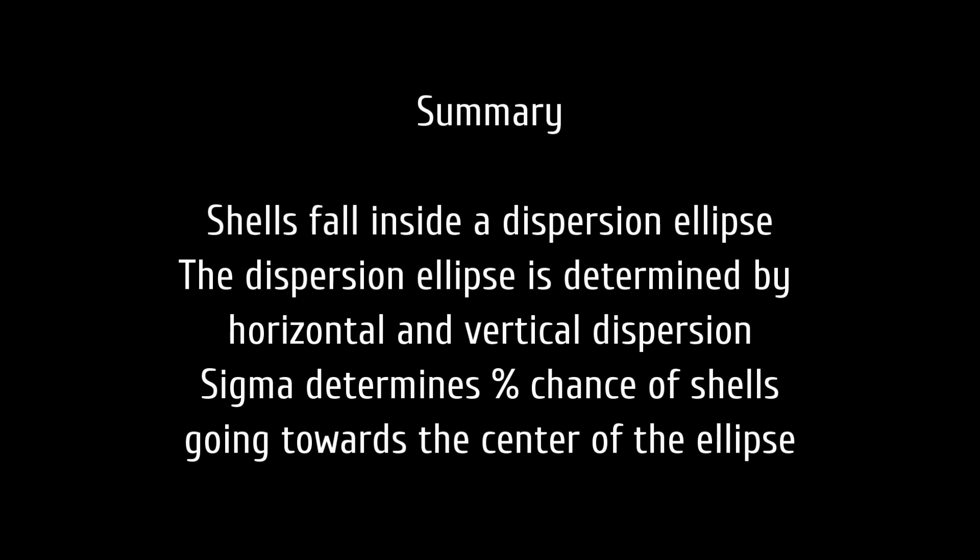To sum up everything: when you fire, your shells fall inside a dispersion ellipse. That dispersion ellipse is determined by horizontal and vertical dispersion — horizontal is the value you see in port, and vertical dispersion is calculated through ballistic calculations. Your Sigma determines the percentage chance of your shells going towards the center of the ellipse. If you're looking for the best possible dispersion and most consistent salvos, what you're looking for is a good Sigma value — something like 2.0 Sigma — combined with lower muzzle velocity and high shell weight. A good example of this in-game is the British battleship Warspite.